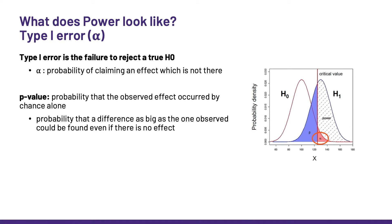Next, we have the type 1 error, which is the failure to reject a true null hypothesis. Alpha is the probability of making the type 1 error — it is the probability of claiming an effect which is not there. It is the error we make when we say there is a difference, whereas actually there is not. The famous p-value that we get from a test quantifies the probability that the effect we observe occurred by chance alone — it's the probability that a difference as big as the one observed could be found even if there is no effect.